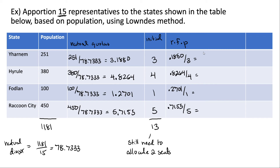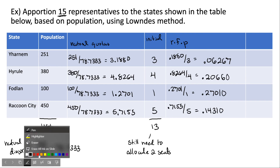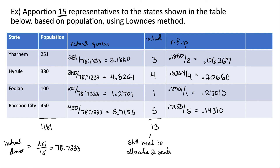We get the following relative fractional parts. Some of these only have four decimal places — if the calculator only gives you four and doesn't go further, you don't need more, though taking it to 5 would just add a zero. The largest relative fractional part is 0.2701, so Fodlin gets an extra seat, going from 1 to 2. The next largest is 0.206, so Hyrule goes from 4 to 5. Yarnam stays at 3 and Raccoon City stays at 5. Adding up the final allocations gives 15, which is the correct house size.